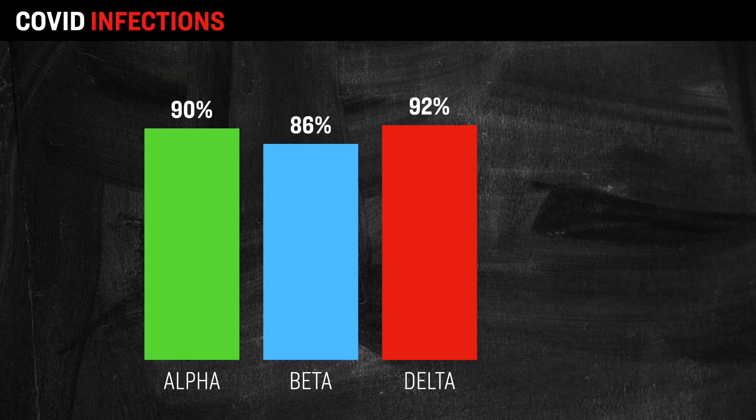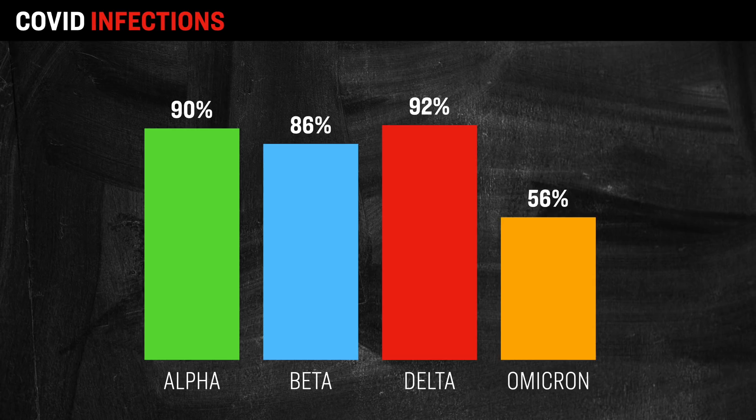The data we just looked at was specifically in regard to severe cases. However, looking at overall infection rates, here's what the researchers found—and again, all the data we're about to look at is for those who are naturally immune. Against the Alpha, Beta, and Delta strains, natural immunity protection was hovering at around 90%, give or take. However, against Omicron, it offered a 56% protection rate, meaning that the level of protection decreased precipitously for the Omicron variant.